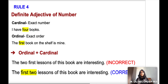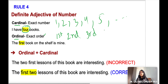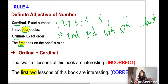Rule four: there are two kinds of adjective of number — cardinal and ordinal. Cardinal tells the exact number: 1, 2, 3, 4, 5. For example, 'I have 4 books.' Ordinal tells the order: 1st, 2nd, 3rd, 4th, 5th. For example, 'The first book on the shelf is mine' or 'The third girl in the queue is my sister' — these use ordinal adjectives.